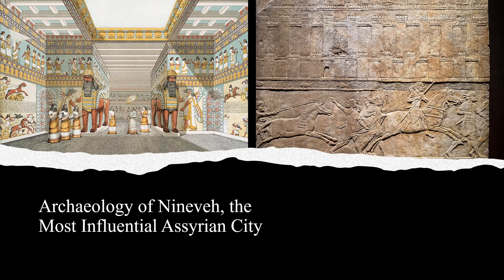Now we'll take a look at Nineveh, which is probably the most influential Assyrian city. If Assyria was the political capital, then Nineveh was the cultural capital of the Assyrian Empire. Here we see the reliefs have been colored and painted, as the Babylonians would have done. Nowadays the paint has long since disappeared, but you can see the action and the movement depicted in the reliefs of Nineveh.